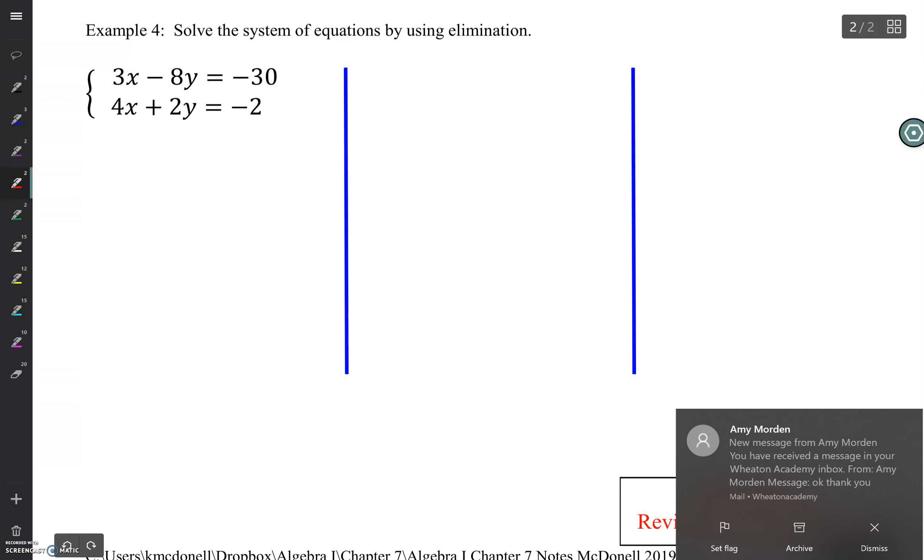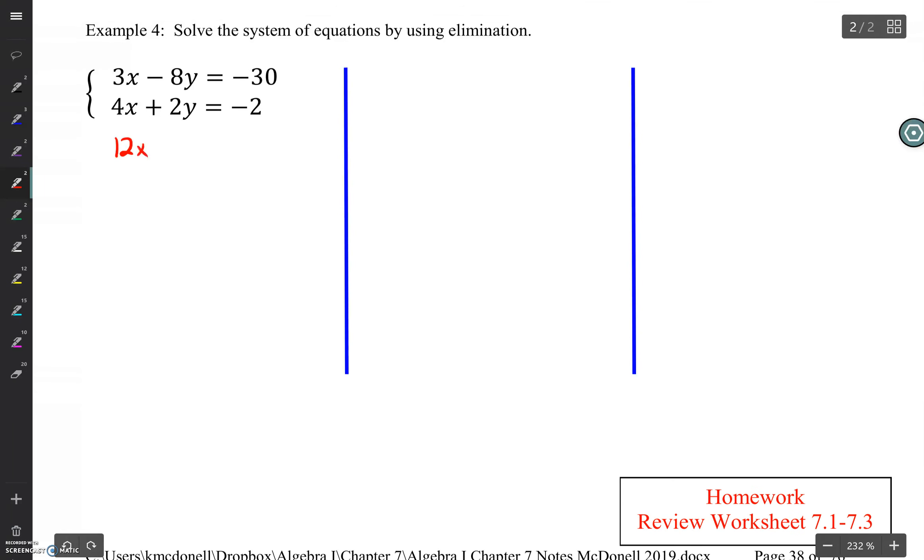We can either target getting 12x and negative 12x on this first half by multiplying by negative 3 and positive 4, and that would work. Or we can target getting negative 8y and positive 8y on the second column. If I was going to look at those two and decide between them, I would start to always do what was easier. What would you think we would have as a scalar on the y values to get the 2y to become an 8y and cancel out? And I hope you would say 4.